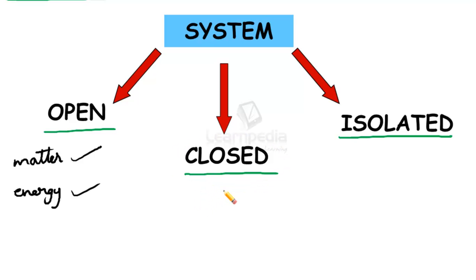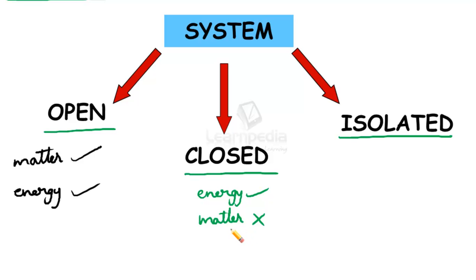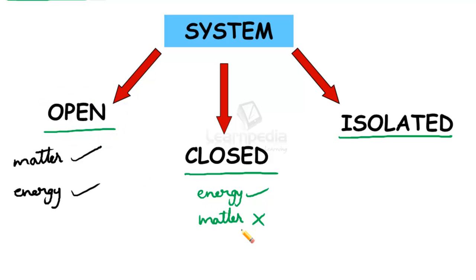In a closed system, a system can exchange only energy but not matter. So only energy is exchanged between the system and the surroundings, not matter. For example, when hot tea is placed in an open vessel, due to vaporization some matter goes out and energy is also moving out — that is an open system. But when the same hot tea is kept in a closed steel teapot, the vapors are not coming out, though energy can still be exchanged between the system and the surroundings. That is an example of a closed system.